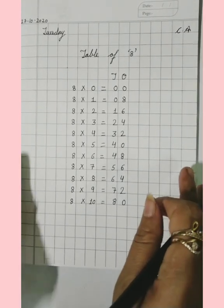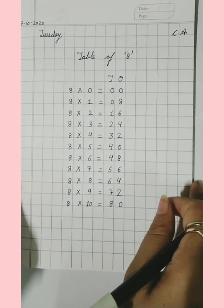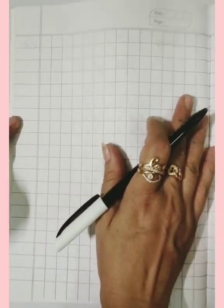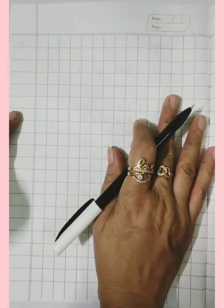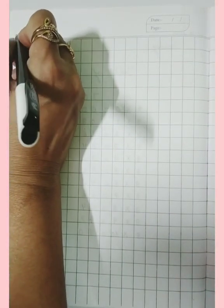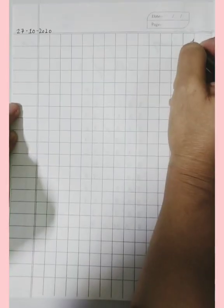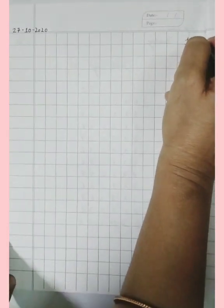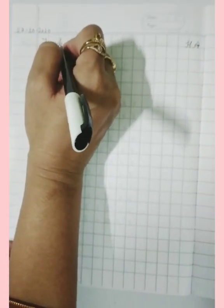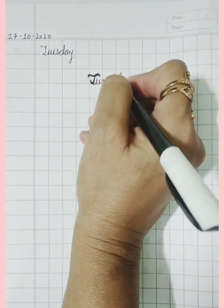You have to write down this table in your math notebook also, and learn all the tables from 2 to 8. Now I am giving you homework of jumble tables also. You have to do this homework at home. Write down the page: 27 October 2020, Tuesday. This is your homework. Topic is jumble tables.